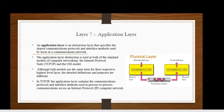The last layer is the application layer. This is the seventh layer of the OSI model. An application layer is an abstraction layer that specifies the shared communication protocols and interface methods used by hosts in communication networks.